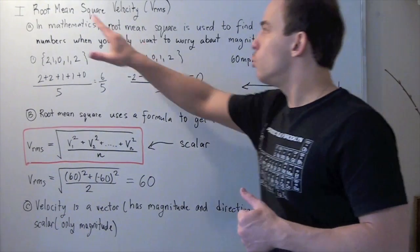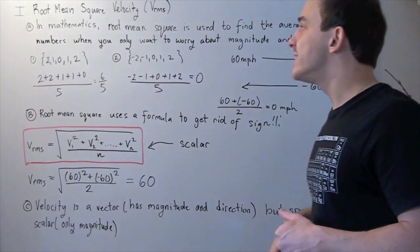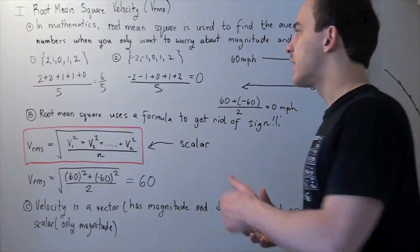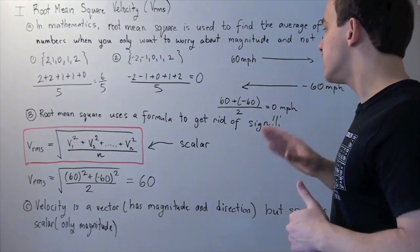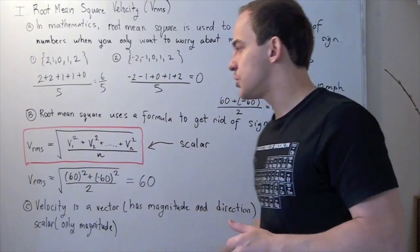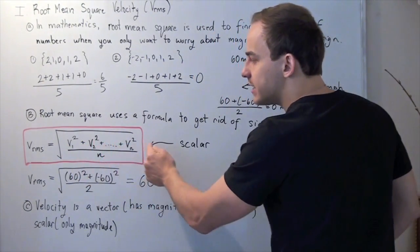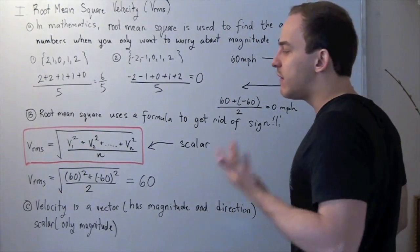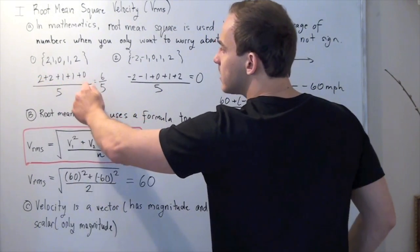So that's where the root mean square formula comes from. What this formula does is it takes away these negatives, and gives you the value of this type of average, without the negatives. So let's look at the formula. V RMS is equal to, you take the squares of every single velocity, or every single value, and then you divide that by n.